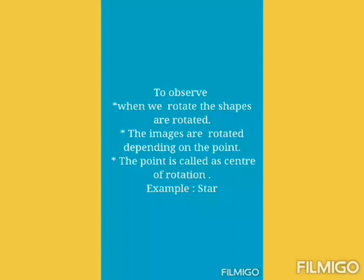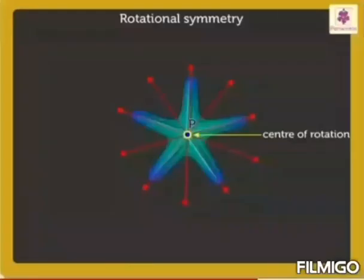Second point. The images are rotated depending on the point. Third point. The point is called as center of rotation. For example, star. 5 lines of symmetry. These lines meet at the point P. This star can be rotated above it of fixed point P. This fixed point P is center of rotation. So, P is denote center of rotation.